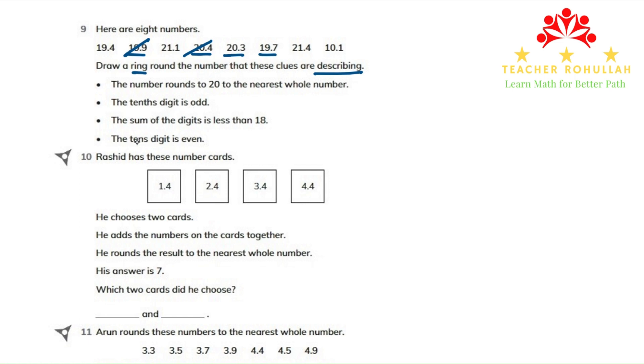Let's move to the last clue. The last clue says the tens digit is even. So the number which is having an even number in the tens digit is 20.3.